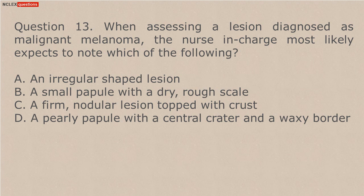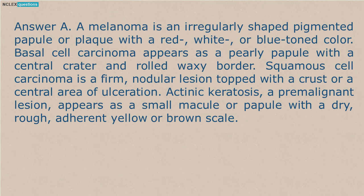Answer A. A melanoma is an irregularly shaped pigmented papule or plaque with a red, white, or blue-toned color. Basal cell carcinoma appears as a pearly papule with a central crater and rolled waxy border. Squamous cell carcinoma is a firm, nodular lesion topped with a crust or a central area of ulceration. Actinic keratosis, a premalignant lesion, appears as a small macule or papule with a dry, rough, adherent yellow or brown scale.